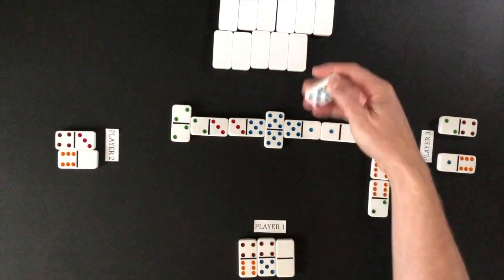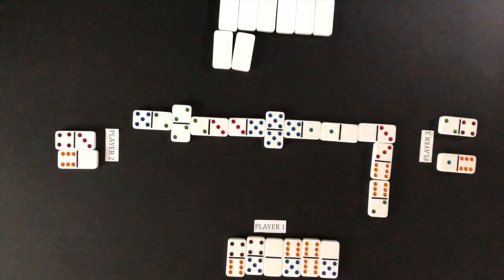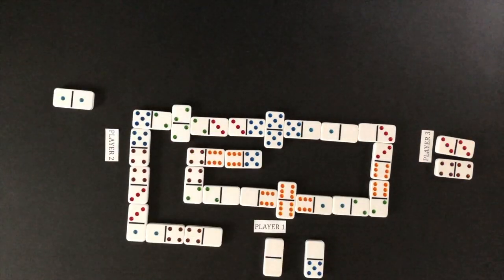A player must continue to draw from the boneyard until he or she is able to play a domino. If the boneyard is empty and a player cannot play that player's turn is skipped.